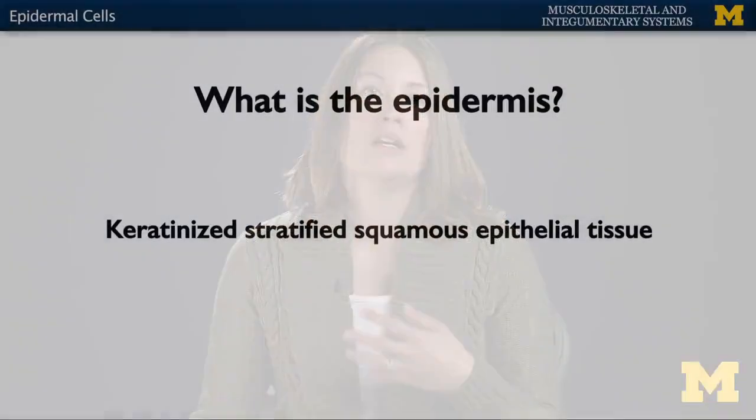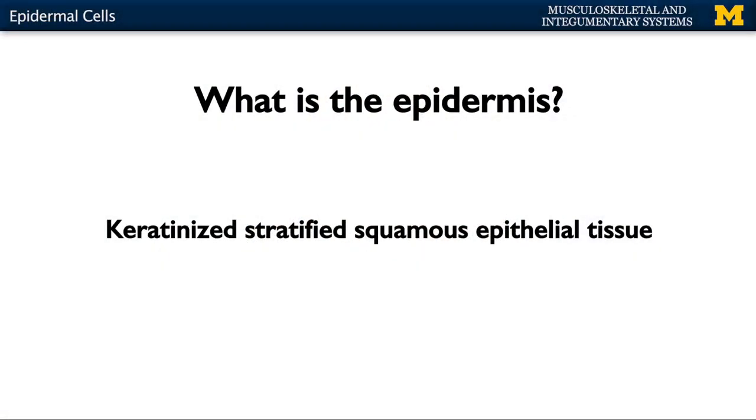Let's continue our discussion, getting into the details of the integumentary system. We're going to start with the most superficial layer, the epidermis, and then move into the deeper layers. With any discussion, we need to start at the cellular level — the smallest level — and there are four main cells we're going to discuss. But first, let's talk about what the epidermis is actually composed of and what these four cells cause it to look like.